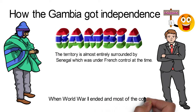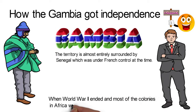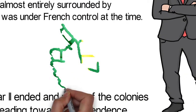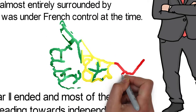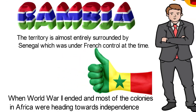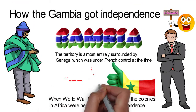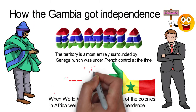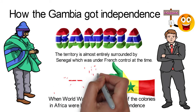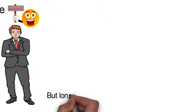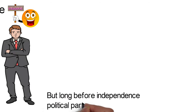When World War II ended and most of the colonies in Africa were heading towards independence, Britain assumed that the Gambia would merge with Senegal, which they were surrounded by. However, local politicians in Gambia preferred to have a small independent nation standing on its own. But long before independence, political parties began to emerge.